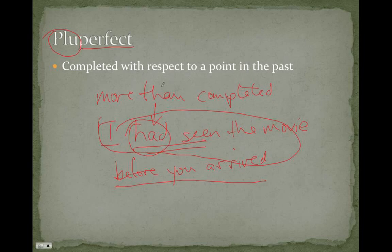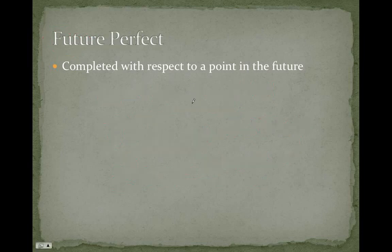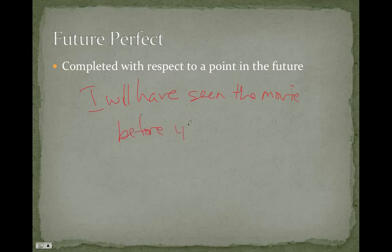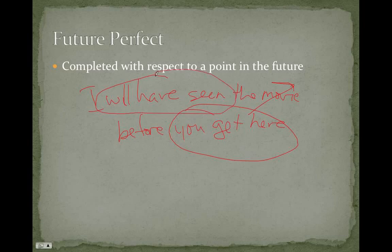Now, if we have a completed action with respect to a point in the past, we also have a completed action with respect to a point in the future. That is, the future perfect. And so, in English, we would say, I will have seen the movie before you get here. So, notice the, before you get here, is a point in the future. And this, seeing the movie, is going to be complete before you get there. And so, those are the six tenses.